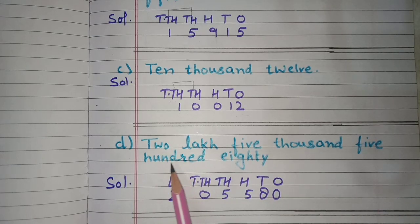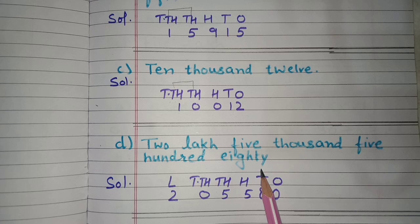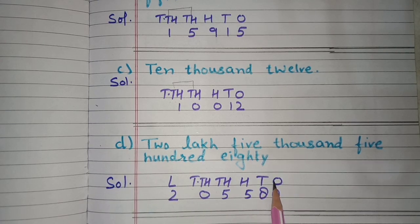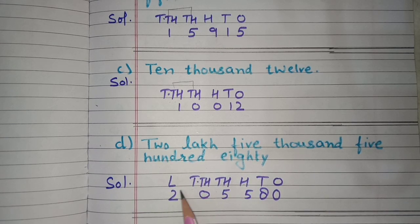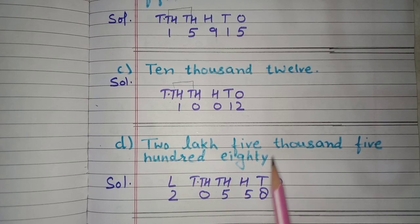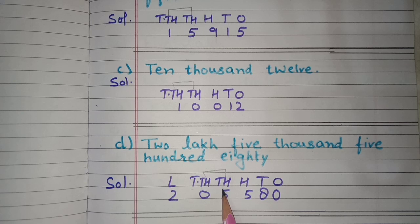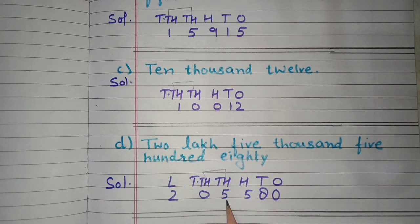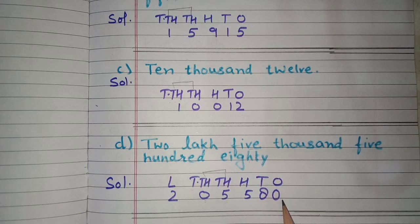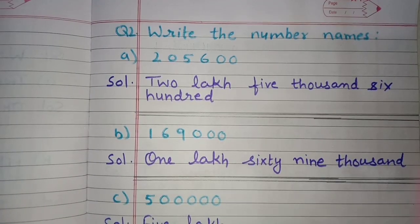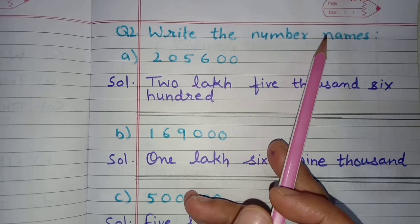Next is part D: two lakh five thousand five hundred and eighty. We write place values up to lakhs. Two lakh: two under the lakhs place. Five thousand: five under thousands (single digit, so only under thousands). Five hundred: five under hundreds. Eighty: eight under tens and zero under ones. So in figures it is 2,05,580.